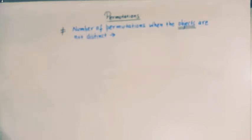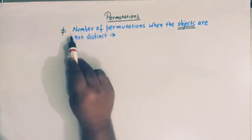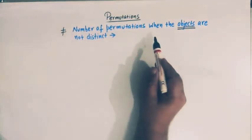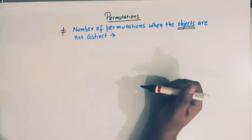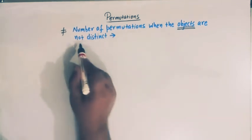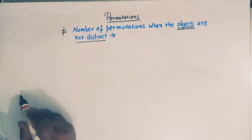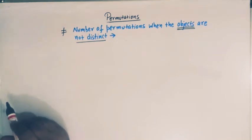Hello viewers. In today's class, we are going to take up one important topic from permutations. The topic is to find the number of permutations when the objects are not distinct. So let us take the first example.